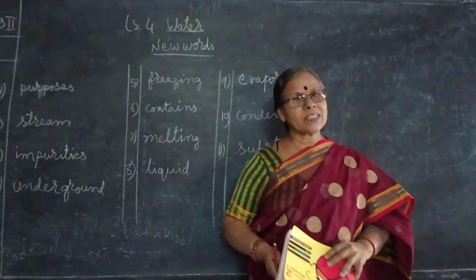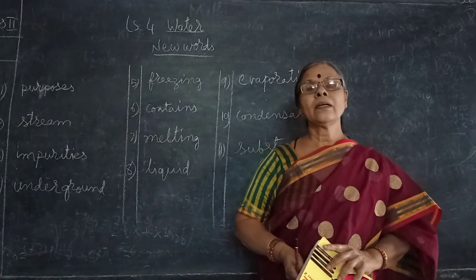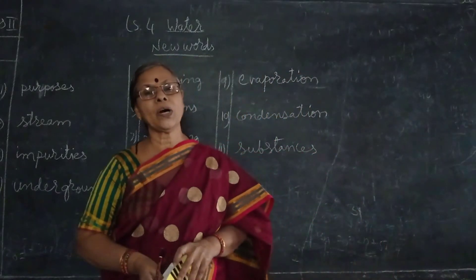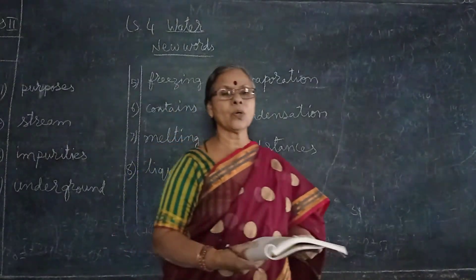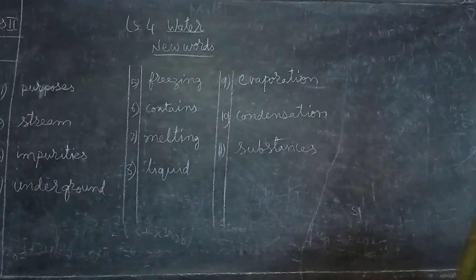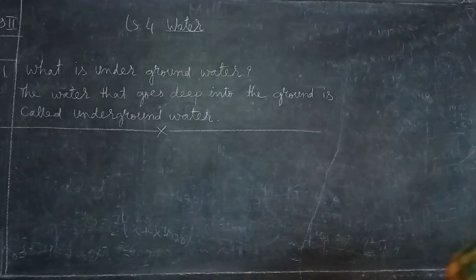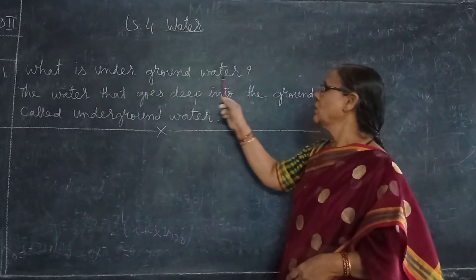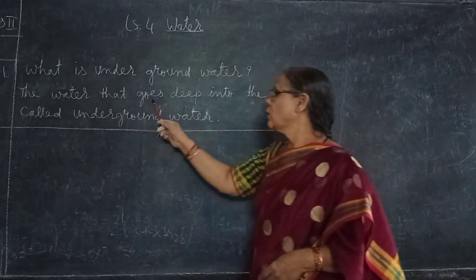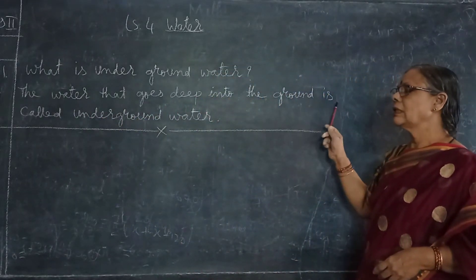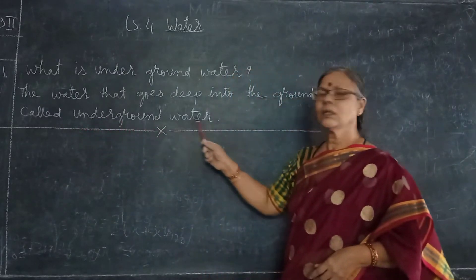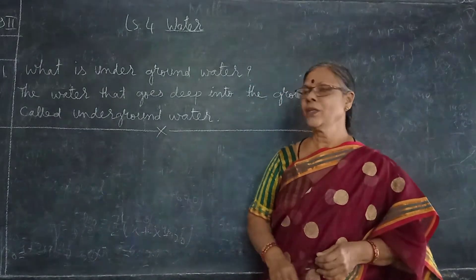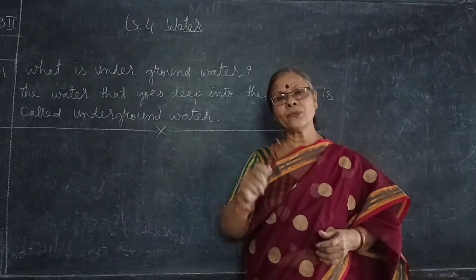So shall we start writing your question answers also. First and second questions — the answers are very easy and they are very small. Be ready with your pencil, rubber, sharpener and notebook also. The first question is: What is underground water? The water that goes deep into the ground is called underground water.